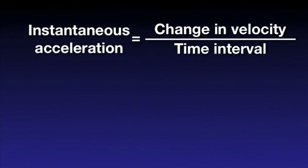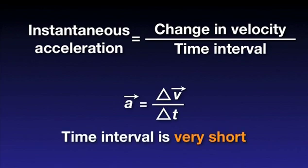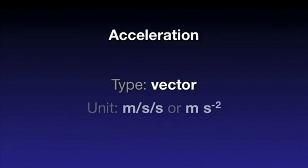The instantaneous acceleration is defined in a similar way, the change in velocity over the time interval where the time interval approaches zero. So, acceleration is a vector and it is measured in meters per second per second or meters per second squared or meters second to minus two.